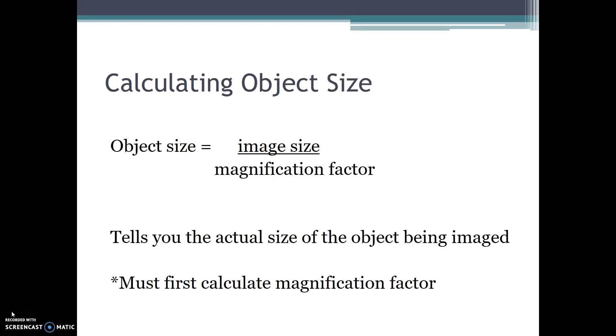To calculate object size, the object size formula is image size divided by the magnification factor. This tells you the actual size of the object that's being imaged. You must first calculate the magnification factor in order to use this formula.